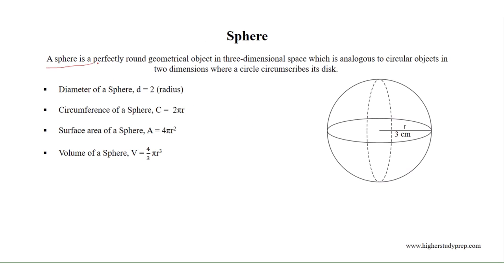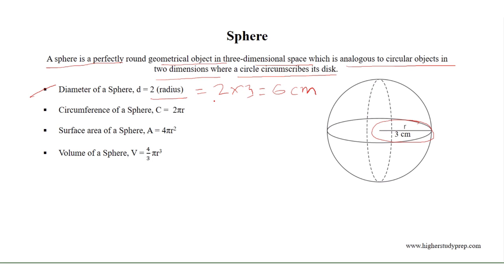Sphere. A sphere is a perfectly round geometrical object in three-dimensional space, which is analogous to a circular object in two dimensions, where a circle circumscribes its disk. Here, this sphere has a radius of 3 centimeters, so the diameter of the sphere equals 2 times the radius, which equals 2 times 3, equal to 6 centimeters. And the circumference of the sphere, where r equals 3 centimeters, equals 2 times pi times 3, which results in 6π centimeters.